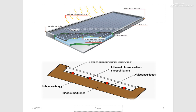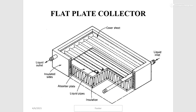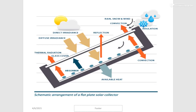This is the schematic diagram of a liquid heating flat plate collector. In this drawing, we can see that solar radiation enters the flat plate collector through the glass, and the heat is transferred from the solar radiation to the working fluid.